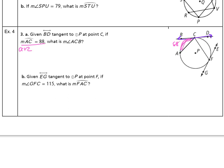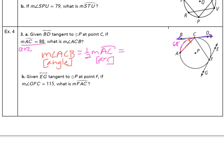If we connect A to C, that arc is 88 degrees. Then it says what is the measure of angle ACB? Looking at the picture, from A down to C is a chord. So from A to C over to B is the inscribed angle formed by the tangent and the chord. By definition, the measure of angle ACB is going to be one half the measure of the intercepted arc AC. The arc is 88 degrees, so if we take half of that, we get the measure of angle ACB to be 44 degrees.